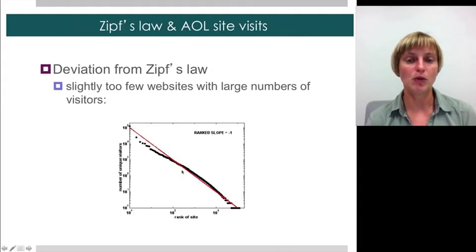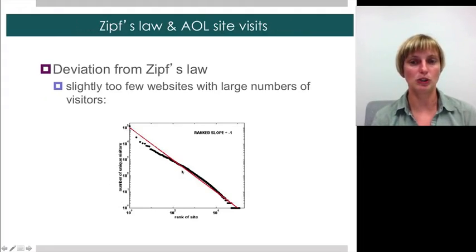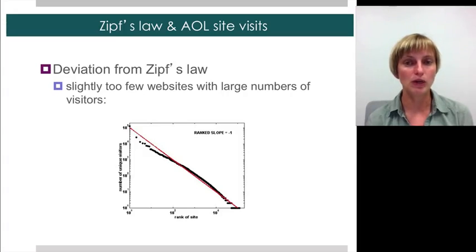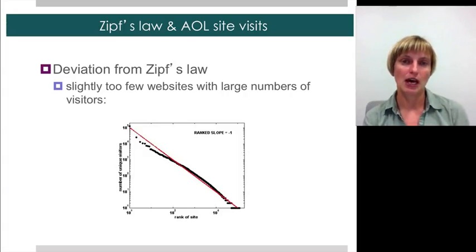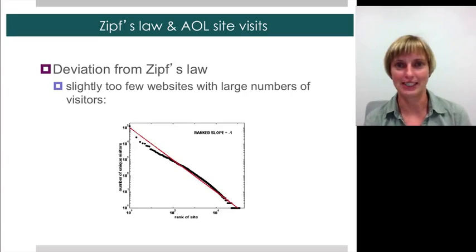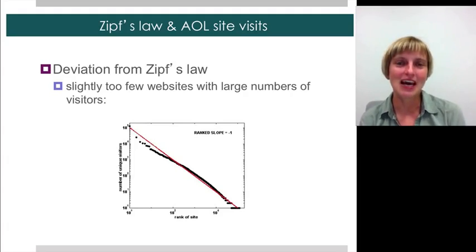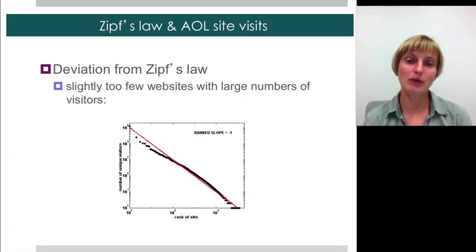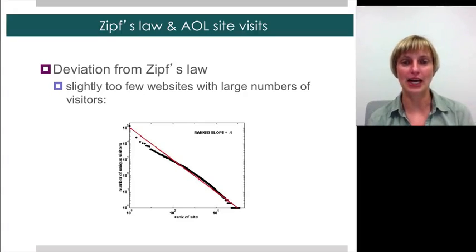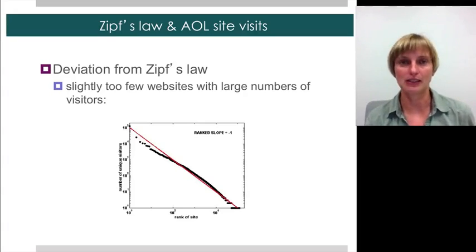So if you have a power law distribution with an exponent alpha of 2 — which is true of the number of unique visitors from AOL to websites, a very old dataset from around 1997 that I studied as a grad student — when you plot the ranked plot, you're going to get an exponent beta of 1, exactly as you would expect.